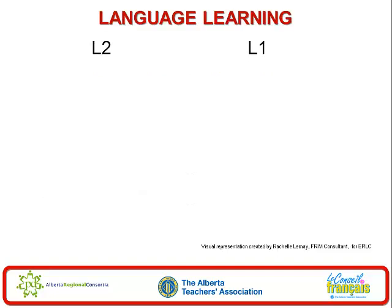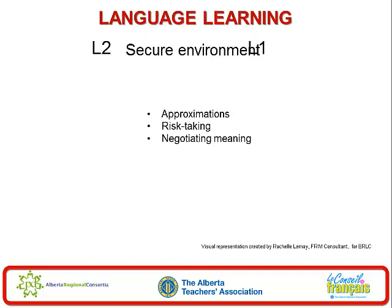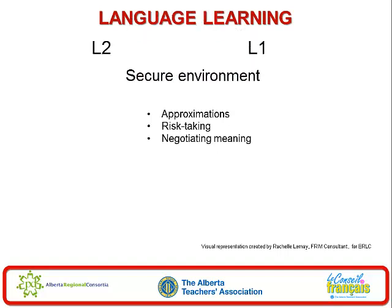Let's talk a little bit about language learning. Second language learning and first language learning are not necessarily the same, but there are some similarities. Children learn by interacting with their environment to satisfy their communication needs. At the beginning, this interaction involves approximations, taking some risks, and negotiating meaning. To encourage students to communicate, the child needs to feel very safe — a secure environment where they can take risks and express themselves as best as possible without the fear of being laughed at or corrected in a negative way.